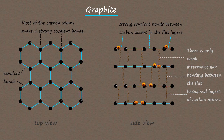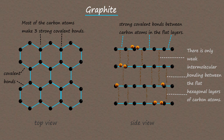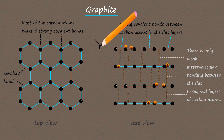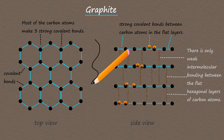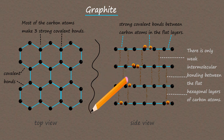While diamond is the hardest natural substance, graphite is soft and slippery due to the fact that when pushed, these weak intermolecular bonds will break. One of the main uses of graphite is pencil lead. When you push down on the pencil, you will be breaking the weak intermolecular bonds and leaving layers of flat hexagon carbon atoms on the paper as you write.